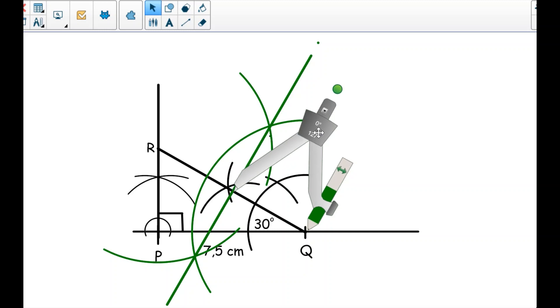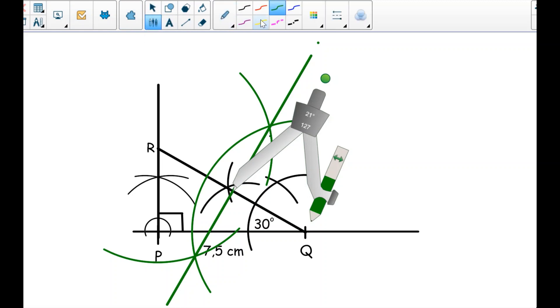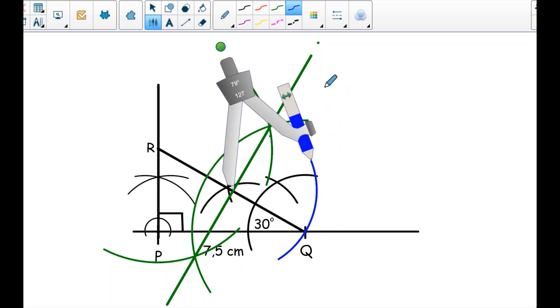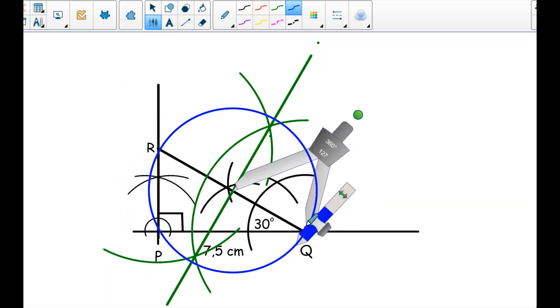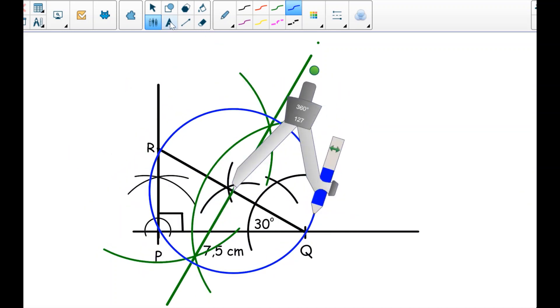If I am correct, my circle must touch R and Q since they are the points through which the circle passes. Because it is a diameter, both ends must touch the circumference like this.